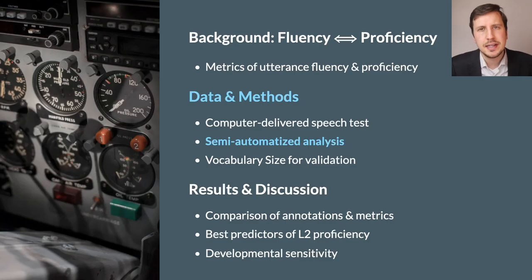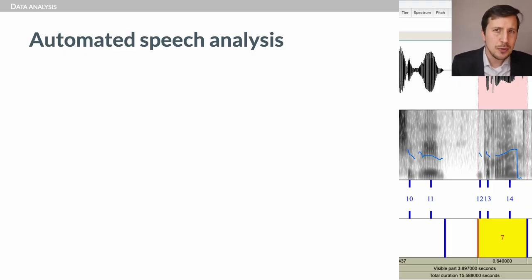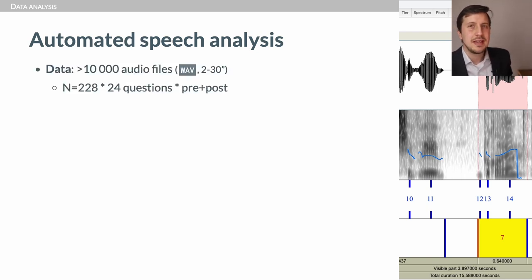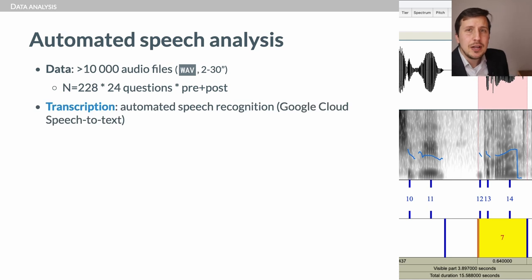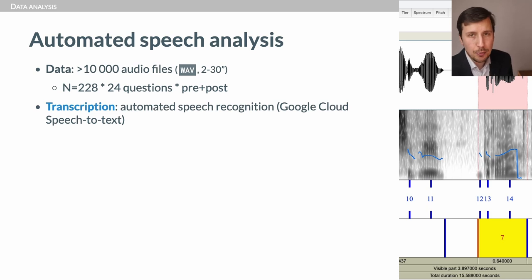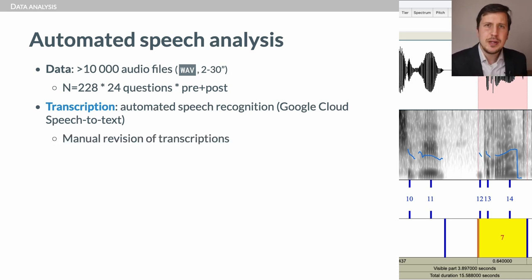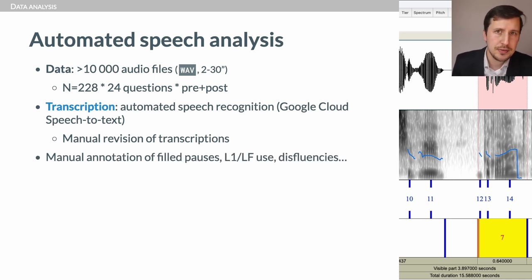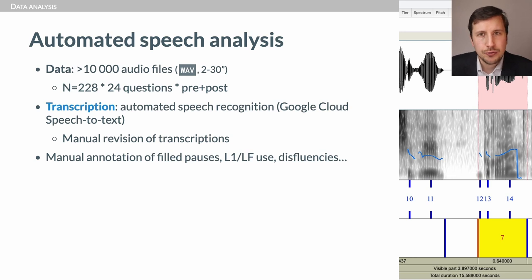The second particularity is the automated speech analysis. With more than 200 participants, times 24 questions, times 2 for pre and post tests, we had more than 11,000 audio files. The first thing we did was automating transcription through the Google Cloud Speech-to-Text automated speech recognition service — it was surprisingly convincing. However, to be sure, Louis, one of my co-authors, manually revised all transcriptions to detect and fix ASR errors, and also annotated the transcriptions for disfluencies such as filled pauses, L1 words and false starts — which we will use for pruning later.